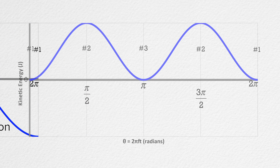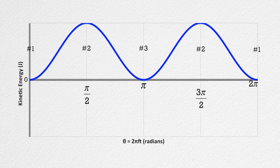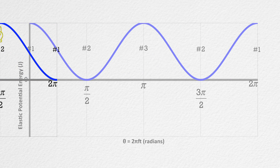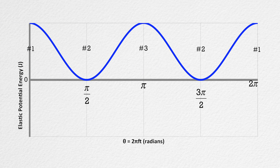It is also good to look at the mechanical energies as well. Here is the kinetic energy of the mass. The kinetic energy is never negative because the velocity is squared, and kinetic energy is zero where the velocity is zero at the two endpoints, one and three, and a maximum where the velocity is a maximum at the equilibrium position, or position two.